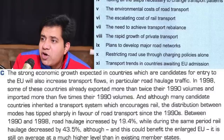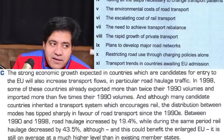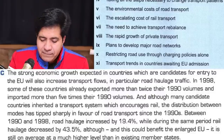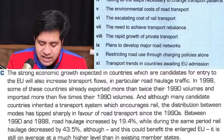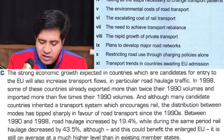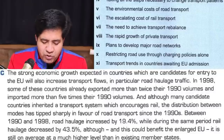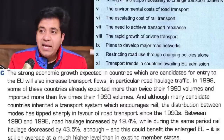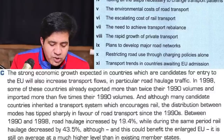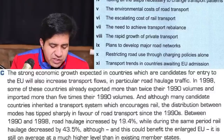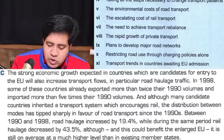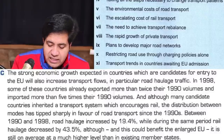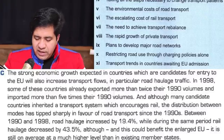Paragraph C: 'The strong economic growth expected in countries which are candidates for entry to the European Union will also increase transport flow.' Sometimes list of headings can be this simple — in the very first sentence you get the idea. Countries waiting to enter the European Union, transport trends — heading number eleven: 'Transport trends in countries awaiting EU admission.'